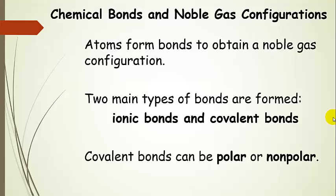Atoms form bonds to obtain a noble gas configuration. There are two main types of bonds that are formed. One is ionic bonds, where oppositely charged ions are attracted to each other with a coulombic attraction. Then there are covalent bonds, which we're going to discuss a lot more — that's where electrons are shared. Covalent bonds can be either polar or nonpolar. Polar means the electrons are unequally shared — one atom is hogging the electrons but not enough to actually take them away and form an ion. Nonpolar bonds involve essentially equal sharing of electrons.